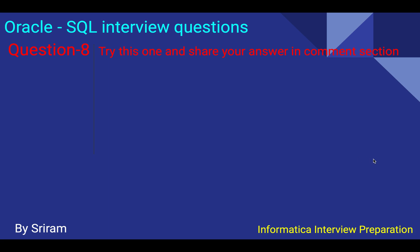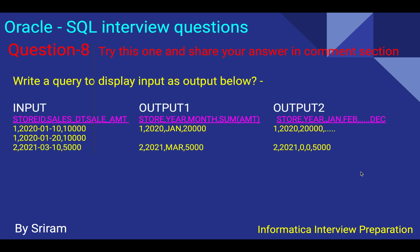Now there are two practice questions — try them and share your answers in the comments. The first is a pivot query. The input has store ID, sales date, and sales amount. You need to display output grouped by store, year, and month of sale with the sum of the sale amount. In the pivoted output, for each store and each year you will have 12 records — one for each month from January to December.